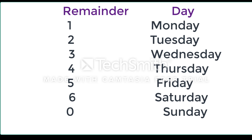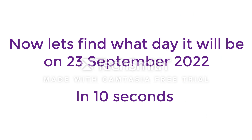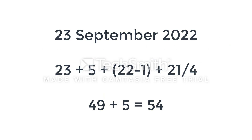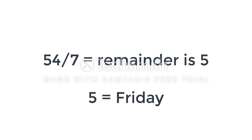Now let's find the day on 23rd September 2022 in 10 seconds. We take the date — 23 — plus the code for September which is 5, plus 22 minus 1, plus the quotient of 21 divided by 4. Adding all these numbers gives 54. Divide 54 by 7 — the remainder is 5, and 5 corresponds to Friday.